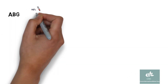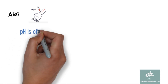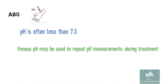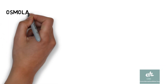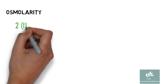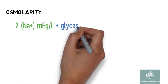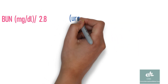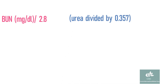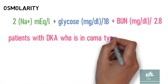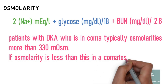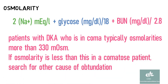ABG: pH is often less than 7.3. Venous pH may be used to repeat pH measurement during treatment. Calculation of osmolarity: 2 × sodium + glucose/18 + blood urea nitrogen/2.8. To calculate blood urea nitrogen, divide urea by 0.357. Patients with DKA who are in coma typically have osmolarity more than 330 milliosmoles per liter. If osmolarity is less than this in a comatose patient, search for other causes.